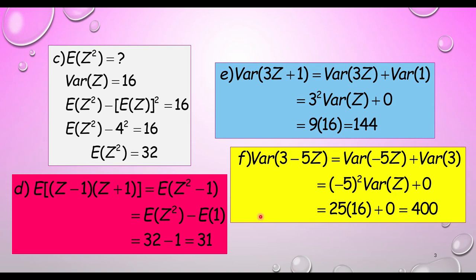For part (f), Var(3 − 5Z): using properties, rewrite as Var(−5Z) + Var(3). Variance for a negative coefficient is always positive, so bring out −5 and square it: (−5)²·Var(Z) + 0 = 25×16 = 400.